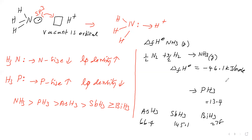When ammonia is passed into water, it dissolves. When phosphine is passed into water, it does not dissolve. Ammonia dissolves because it forms hydrogen bonds with water, whereas phosphine does not form hydrogen bonds with water.